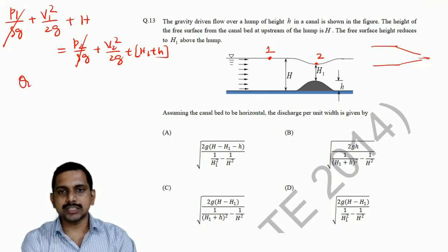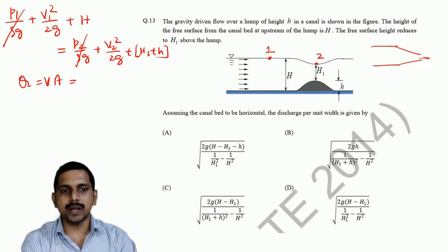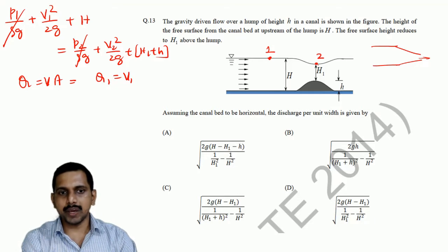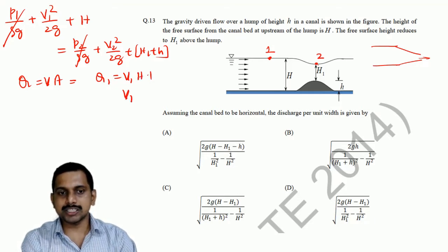when you say discharge, discharge is velocity into area. Now, in the case of Q1, Q1 can be written as V1 into area, which is h into 1. That means, my velocity V1 is equal to Q1 by h. Similarly, velocity V2 is equal to,